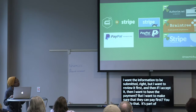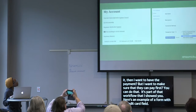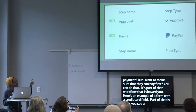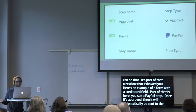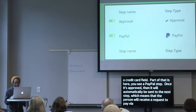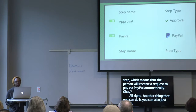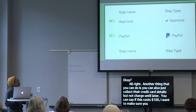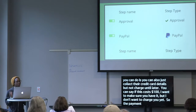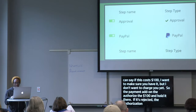You can also collect credit card details but not charge them until later. For example: if this costs $100, I want to make sure you have the $100 but don't want to charge you yet. The payment add-on can authorize the $100 on the card and hold it. If it's rejected, the authorization goes away. If not, you can process the payment. You can also add a PayPal step to the workflow — once approved, the person automatically receives a request to pay via PayPal.